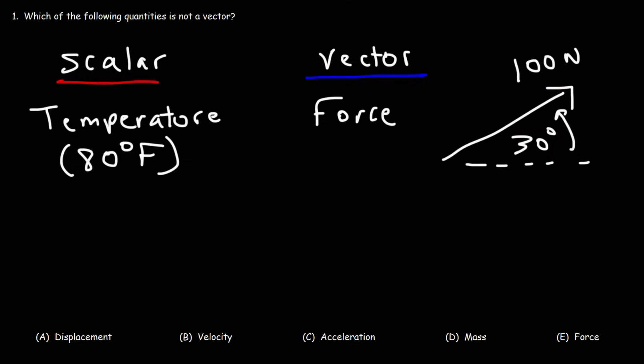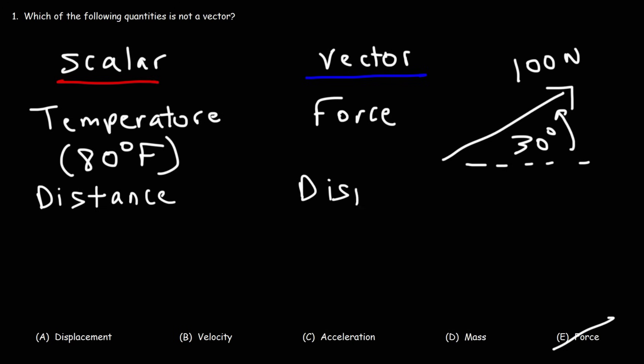Anything that has both magnitude and direction is a vector. So now that we know that force is a vector, we can eliminate answer choice E. You also need to know that distance is scalar, but displacement is a vector.